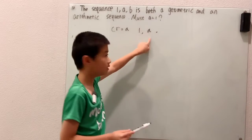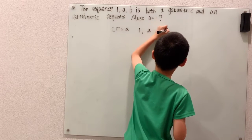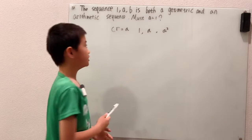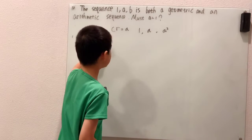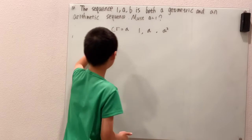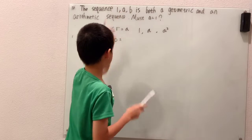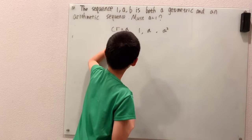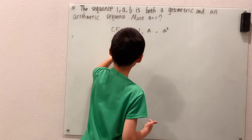Now for the arithmetic sequence, we can do the same thing, right? An arithmetic sequence, instead of the common ratio, you have a common difference of a minus 1. So I'm going to write little colons so we don't confuse these together.